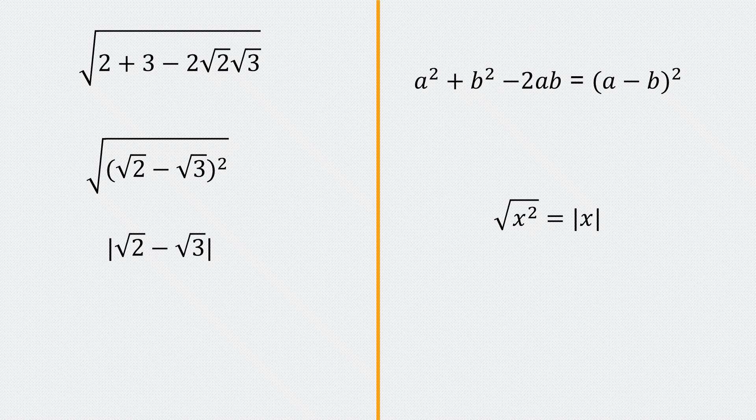So the absolute value of a negative number is the negative of that expression. So I have negative root 2 minus root 3. And the next thing is to reverse it. Since it's negative, multiplying through that expression, you can reverse them. You have root 3 minus root 2. So that's the final answer.